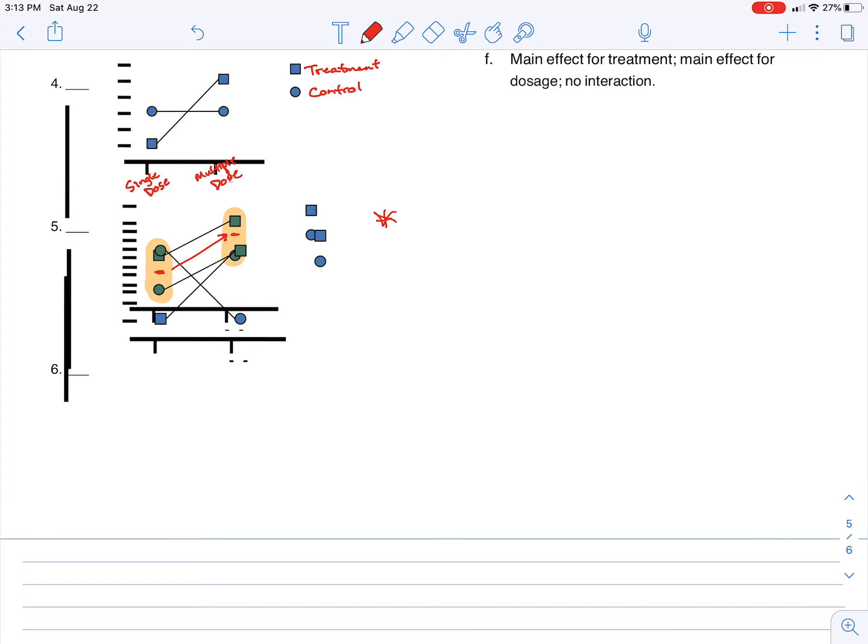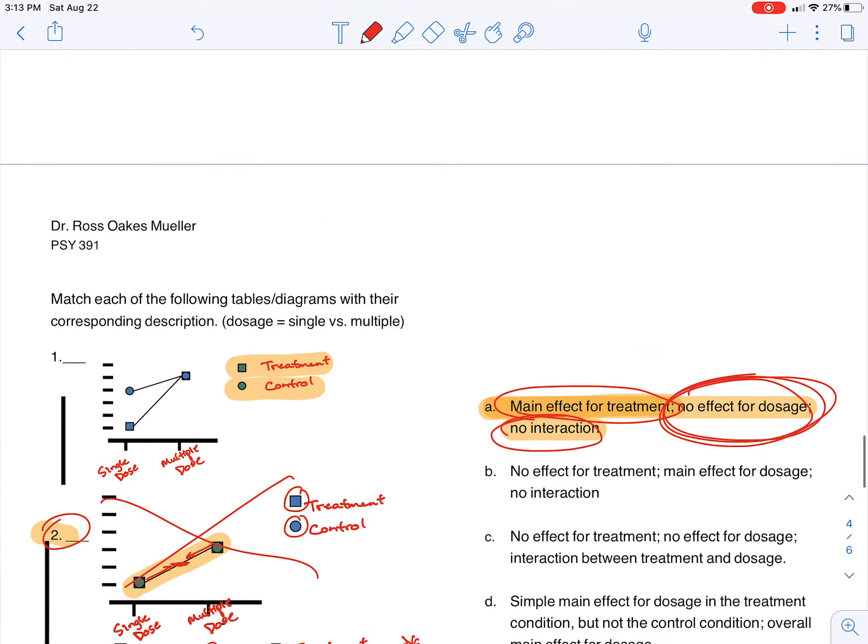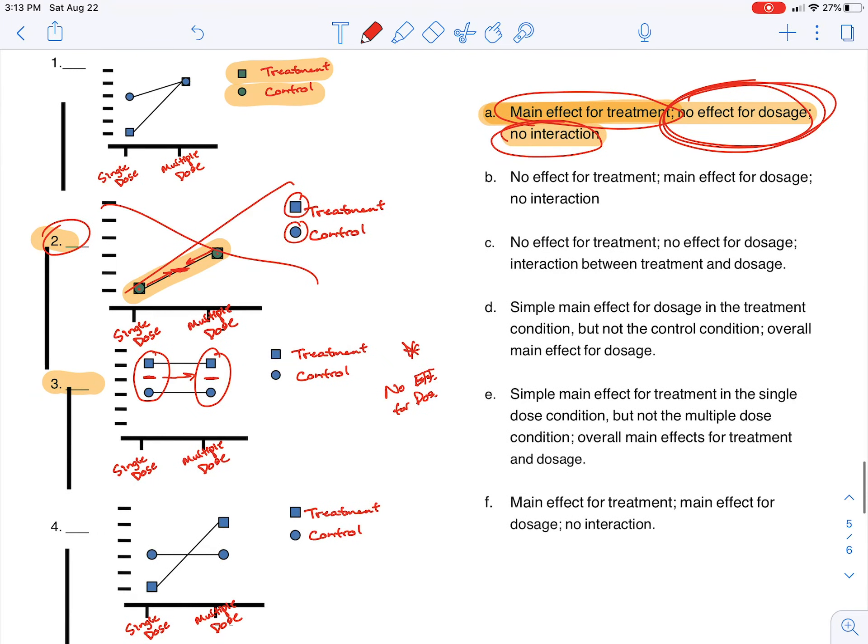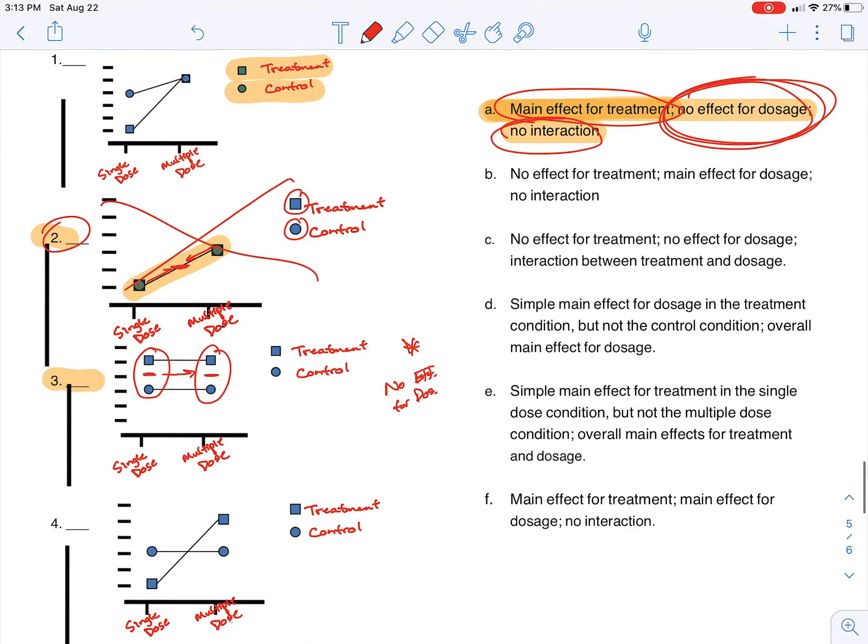So there is a main effect of dosage here. Okay. So we know for certain that number three right here is letter A, where there's a main effect for treatment, no effect for dosage, and no interaction.